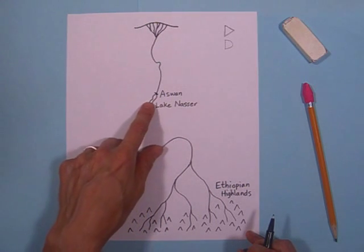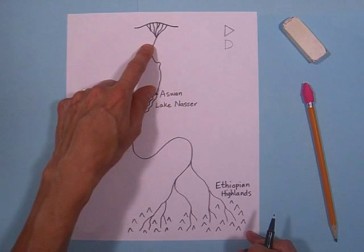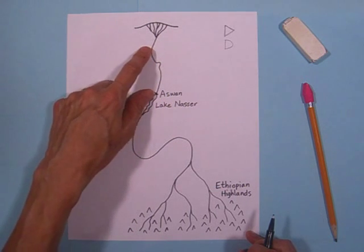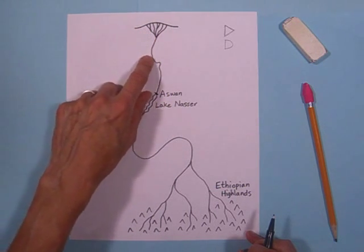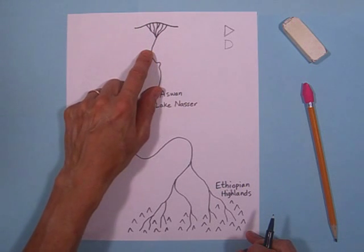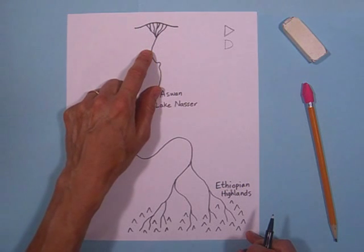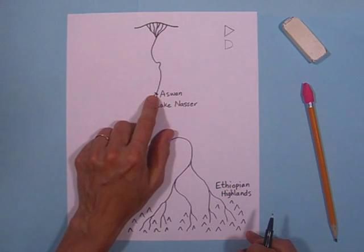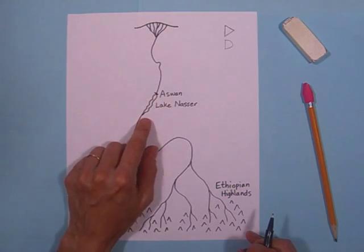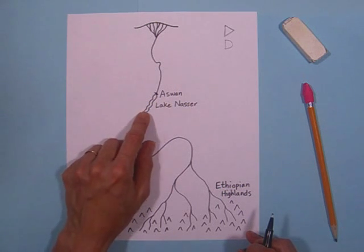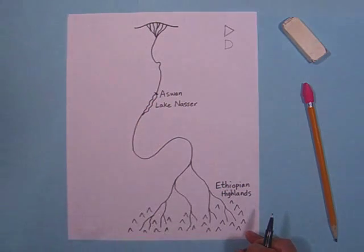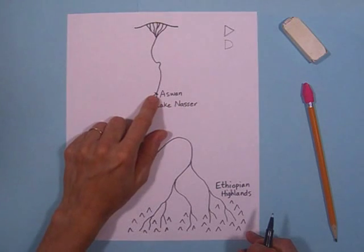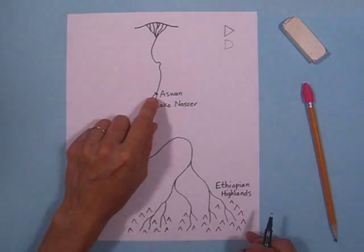And if the dam wasn't there, the water would keep going and this part of the river would get a lot larger and all the people that live along this part of the river would have their houses flooded and there would be great loss of life. So this dam holds the water back and Lake Nasser can grow larger. That's okay. It doesn't hurt anybody. And then the dam can let the water go just a little bit at a time.